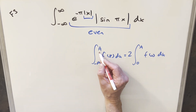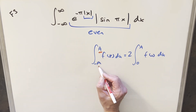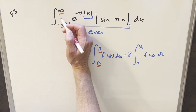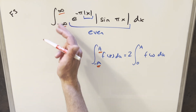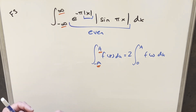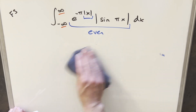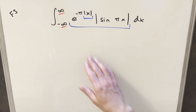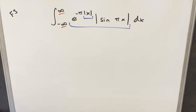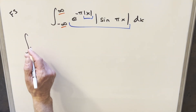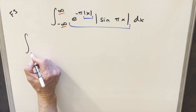The trouble is that for this property we need A and minus A, and we need A to be finite. But we're actually integrating from minus infinity to infinity. There are some ways around this, but I decided to just scrap the even function idea and do this the long way. So I'm going to split up our bounds and put this into two integrals.